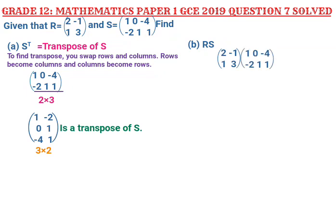What we need to understand first is whether these matrices can be multiplied. Matrices that can be multiplied must have this in common: the number of columns in the first matrix must equal the number of rows in the second matrix. The first matrix R has order 2 by 2, and the second matrix S has order 2 by 3.